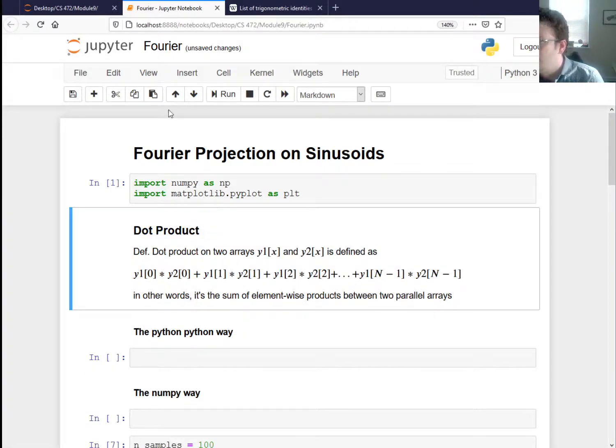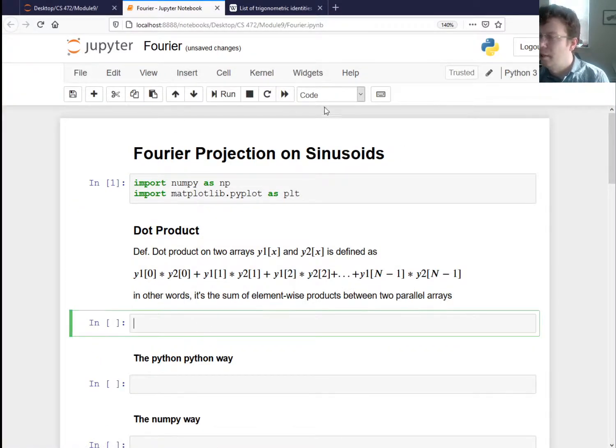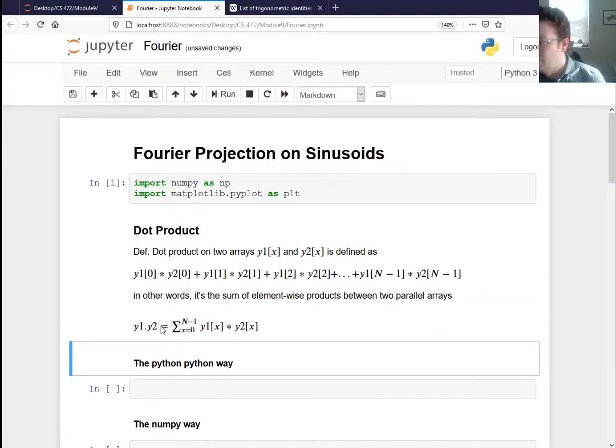Now this way of writing it is a bit cumbersome, so you can also write it mathematically using sigma notation. You can say the notation is y1 dot y2, is equal to the sum from x equals 0, so we're 0 indexed up to n minus 1 of y1[x] times y2[x]. So that's another way to write it.